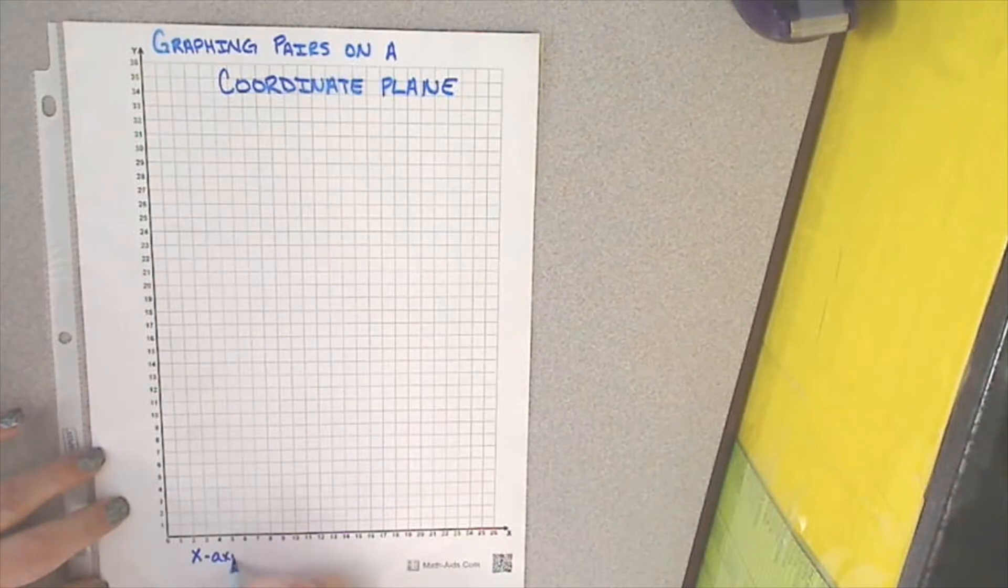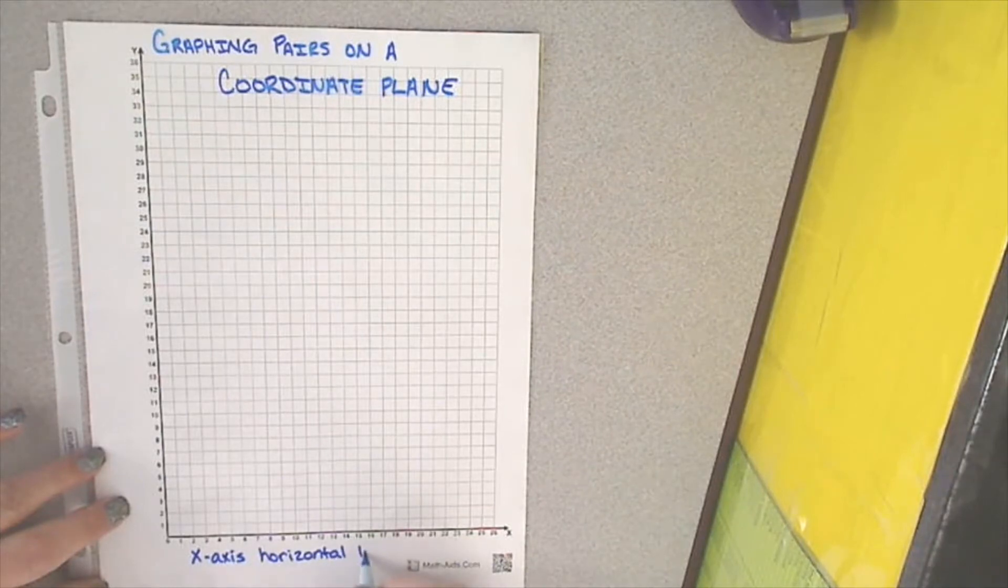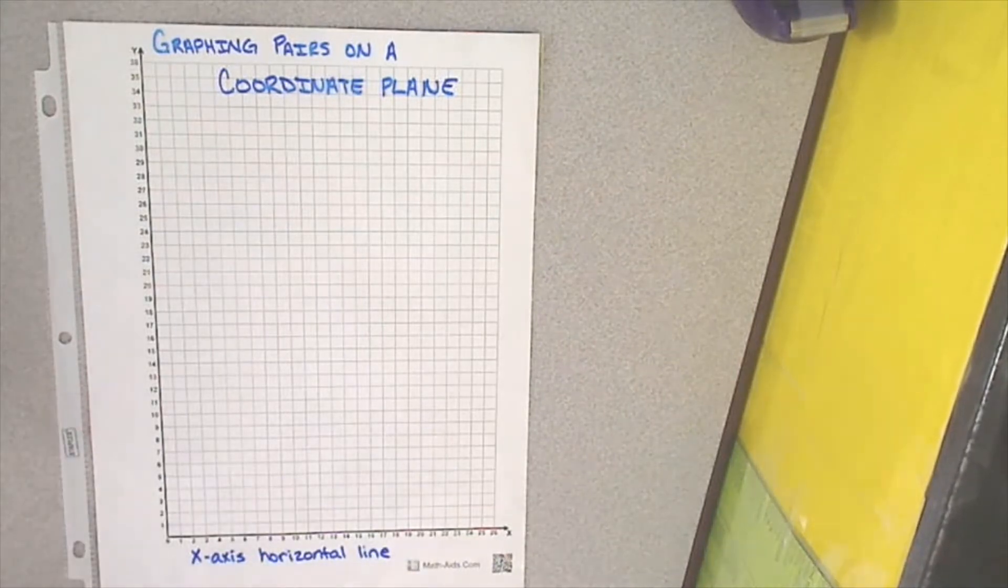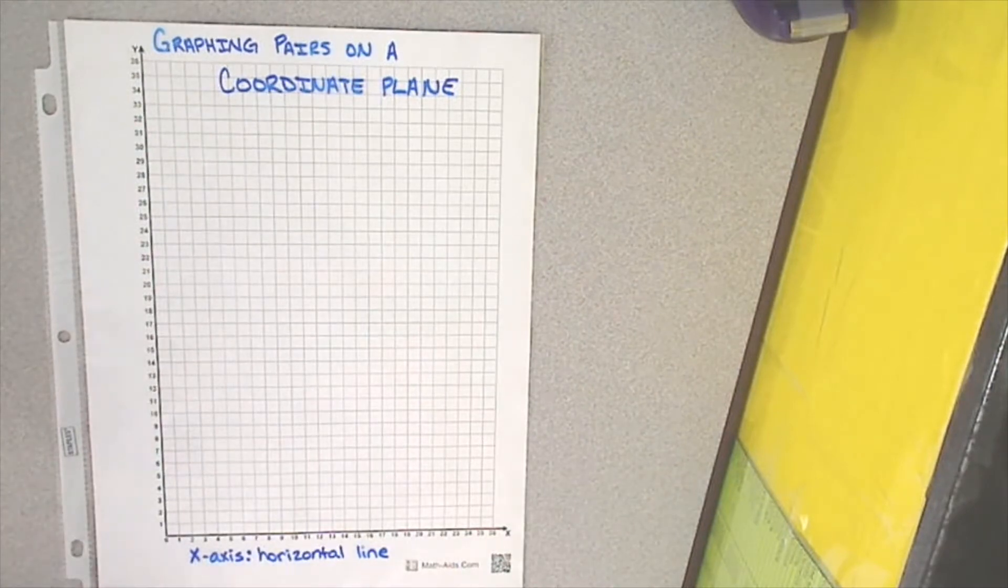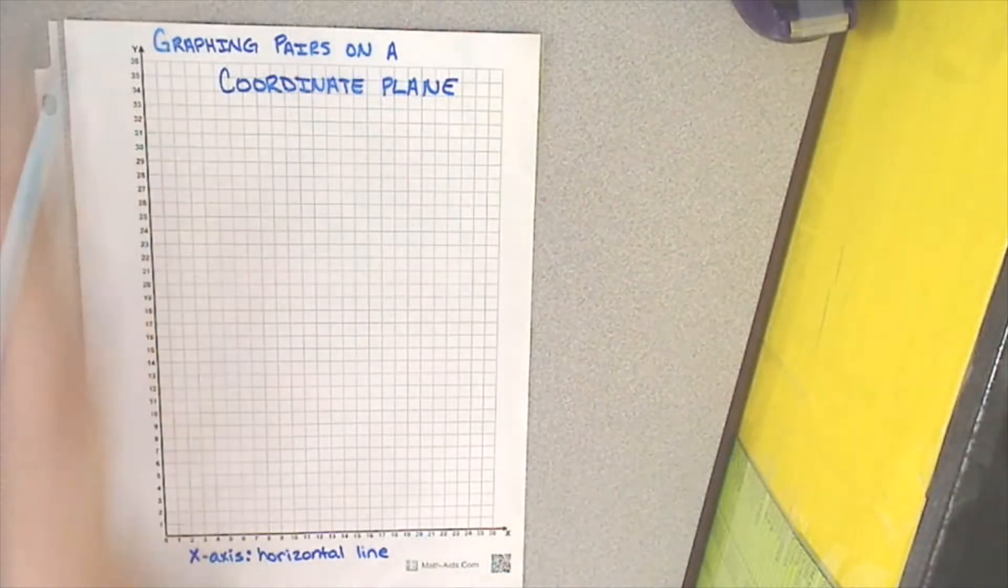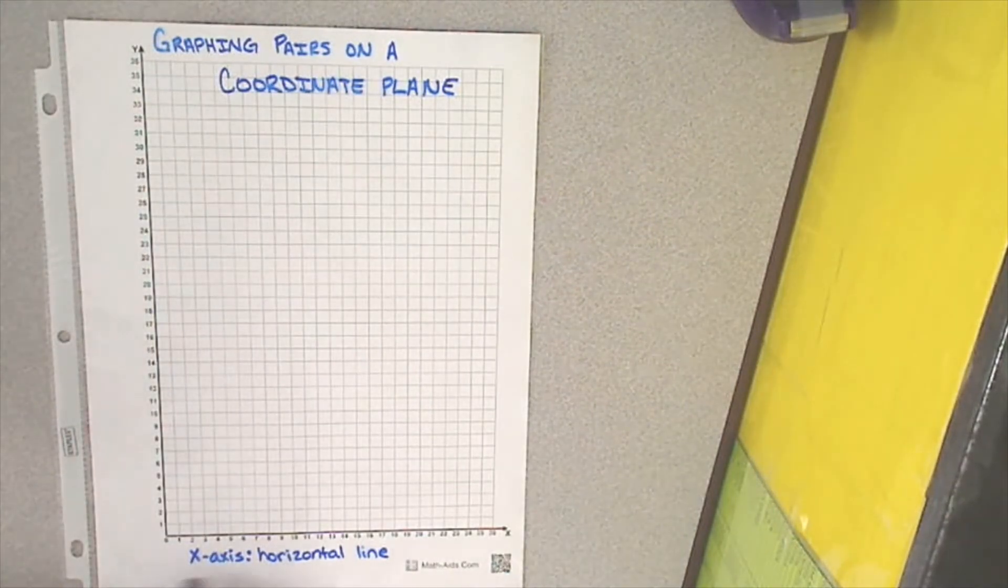So, the x-axis is the horizontal line. Once we found our x-axis, which is always the horizontal line, and I want to make sure that you remember that when you're talking about these things, make sure you use that vocabulary, horizontal and vertical. We've now labeled our x-axis, which is the horizontal line on our graph.